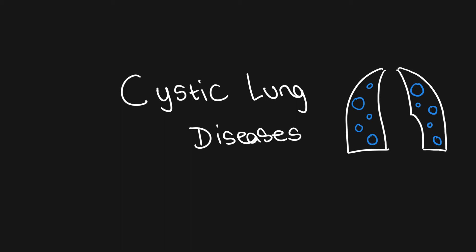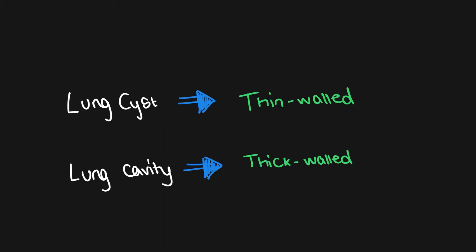In this video, we're going to be discussing the radiological differential diagnoses for diffuse cystic lung diseases. It can be quite difficult to identify a cyst because there are many mimics, such as bronchiectasis and emphysema. The main differential to rule out is a cavity. The key differentiating factor is that a cavity will be thick-walled, whereas a cyst will be thin-walled.